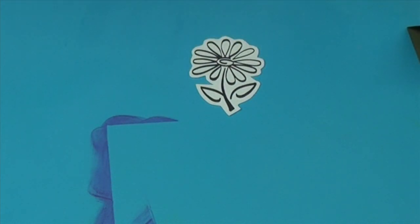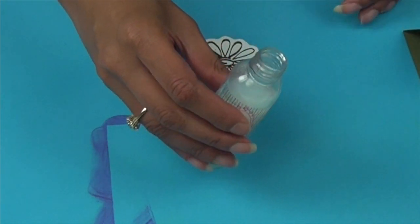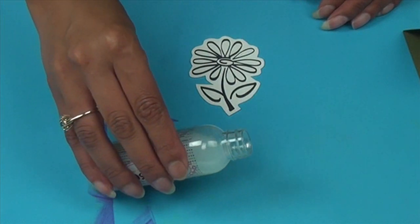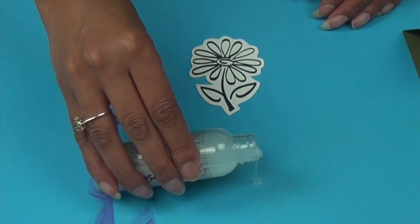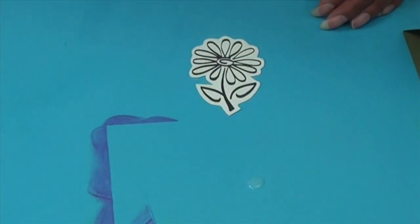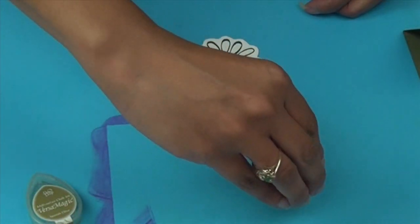To color our flower, what we're going to do is take some Goosebumps texture spray. This is in the shimmer finish. Pour a little bit onto your mat. Then take Versamagic ink in Spanish olive and smear some ink onto the mat.